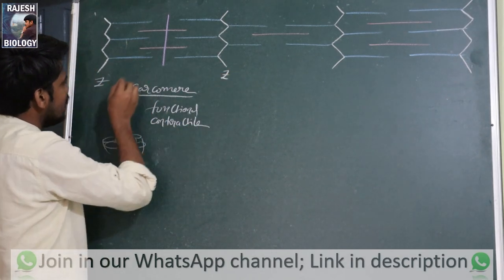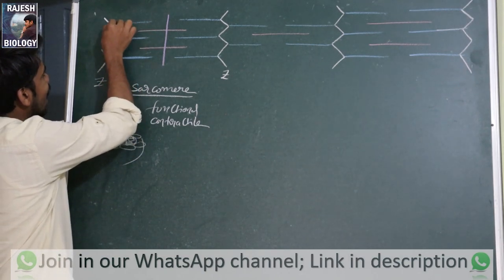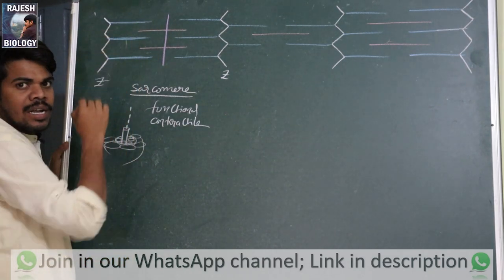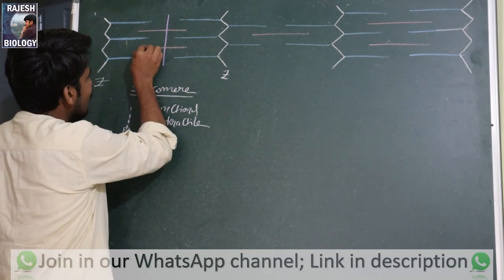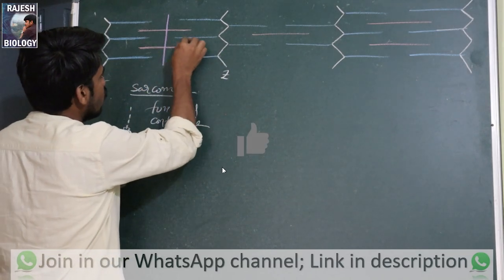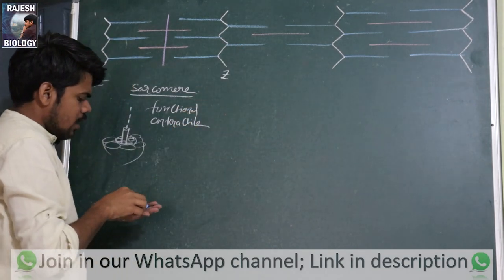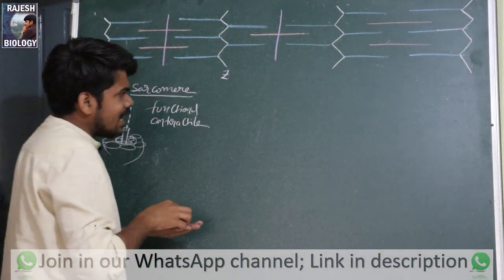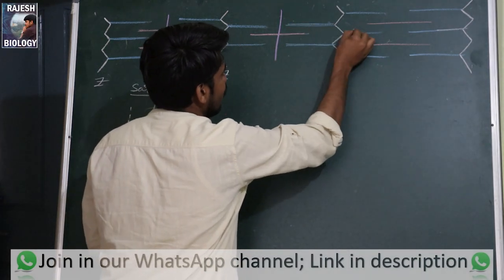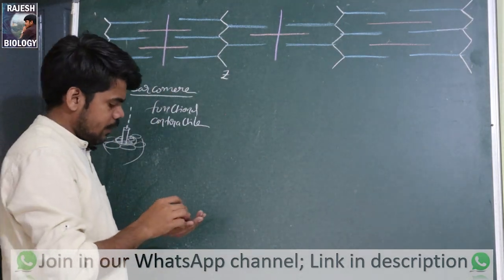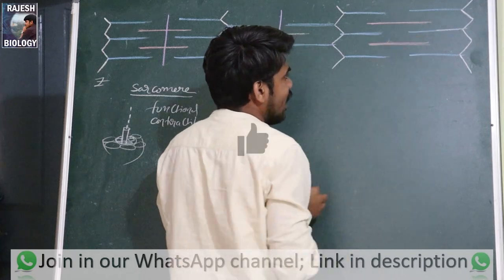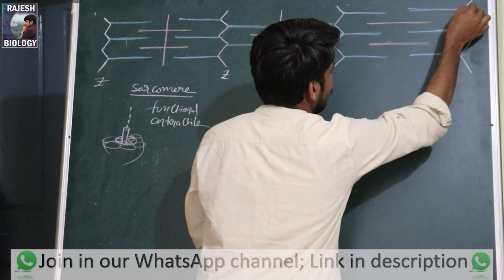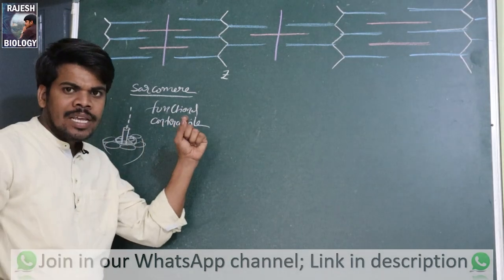The sarcomere has this type of structure. Actin and myosin are alternatively present on the myofibril. The blue color line represents actin and the red color line represents myosin. Myosin is also called the thick filament, and actin is called the thin filament. Myosin forms a dark band and actin forms a light band.